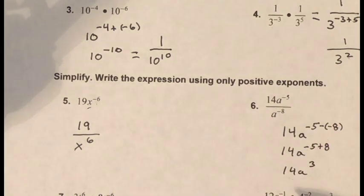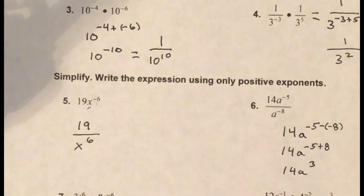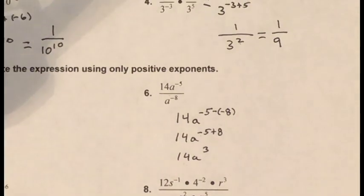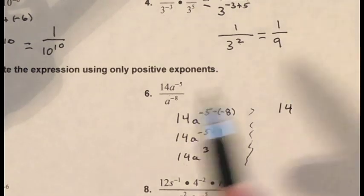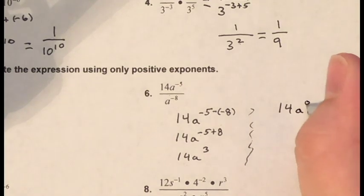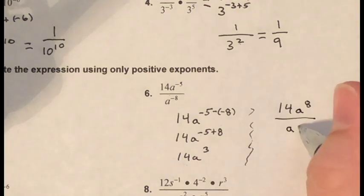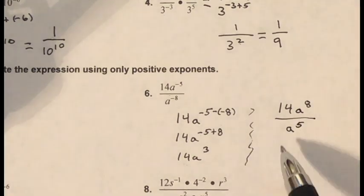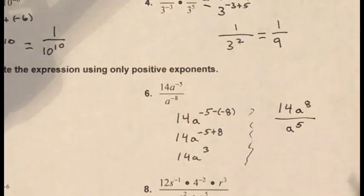There's another way to do this problem. I can get rid of negative exponents right from the start. The 14 stays. The a to the negative eight moves to the numerator and a to the negative five moves to the denominator. Since they're dividing, I subtract: eight minus five gives me a to the third. Result: 14a to the third — same answer, different approach.